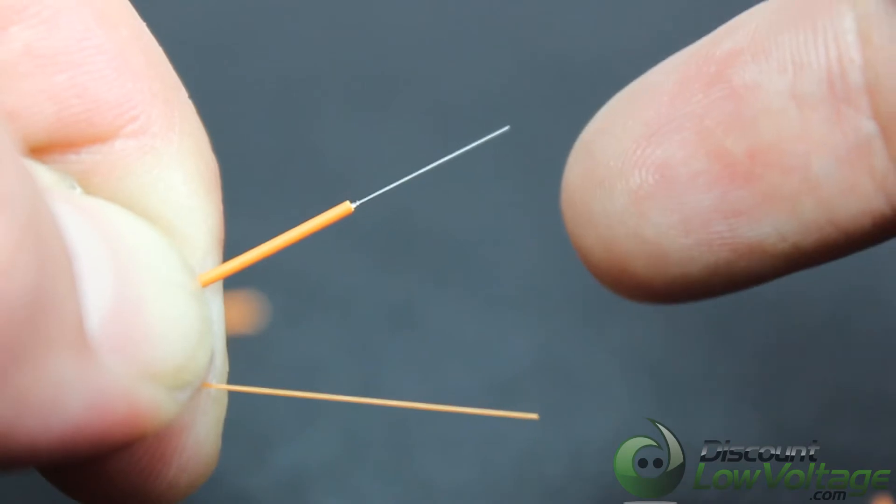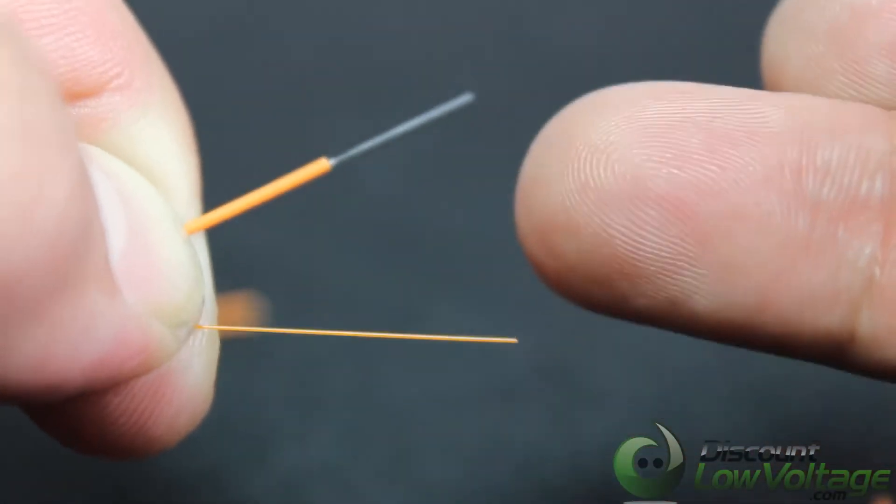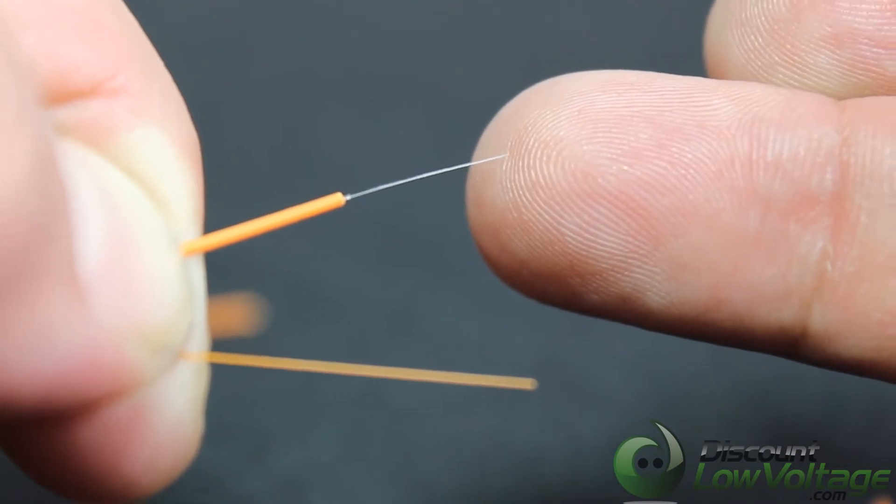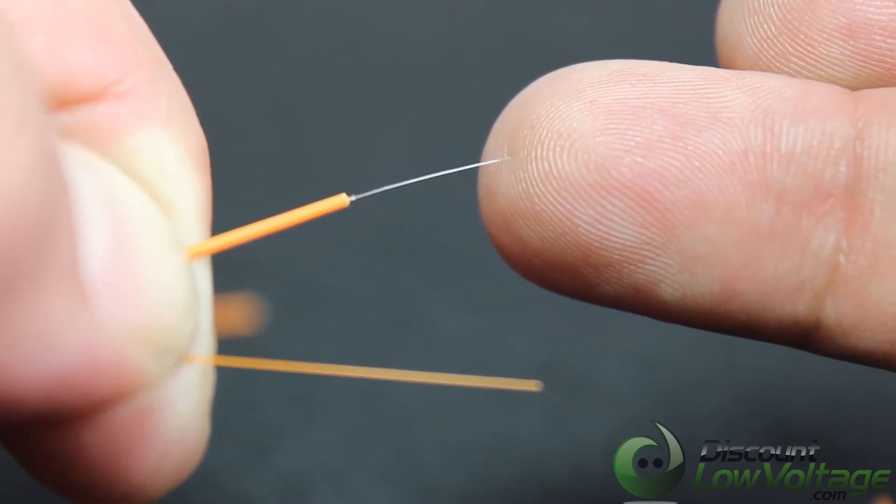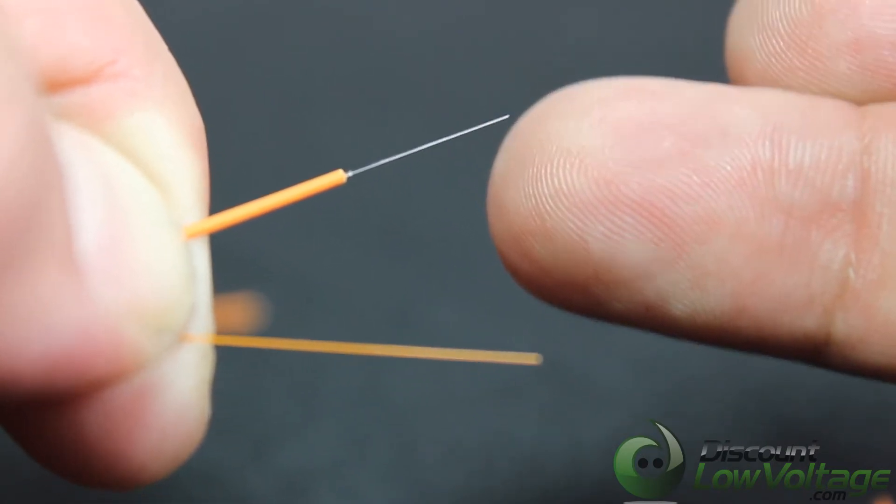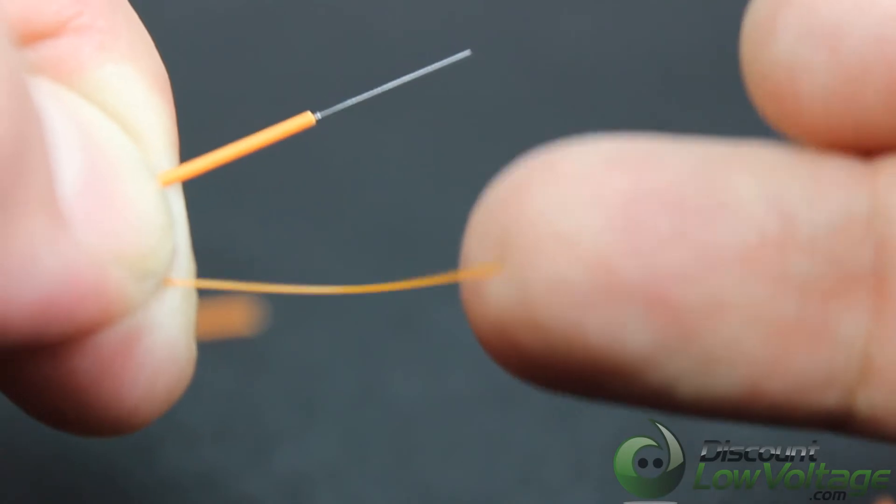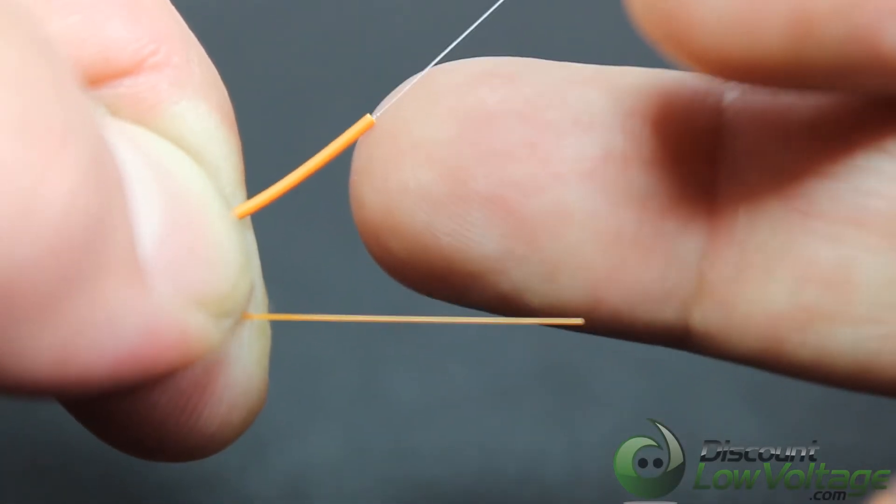Keep in mind these are both multi-mode 62.5 strands, so the core is going to be 62.5, the cladding is 125, and the outside buffer for loose tube you have 250, for the tight buffer you have 900.